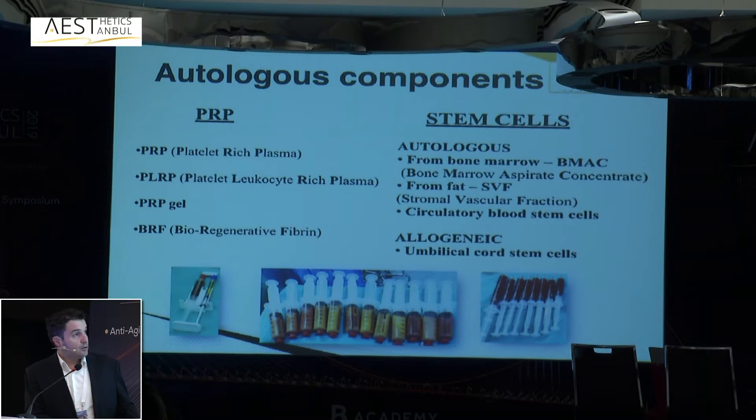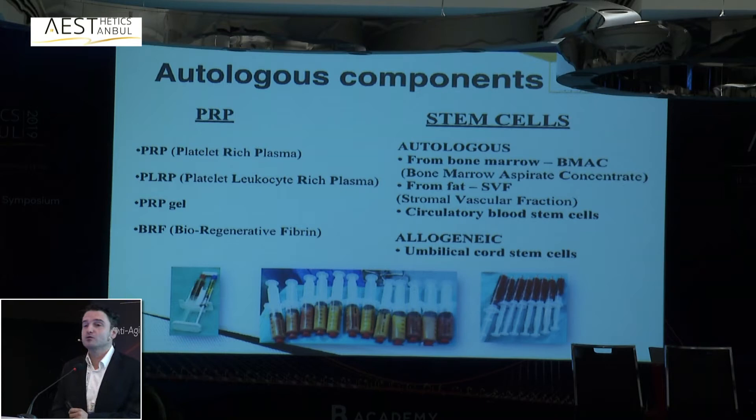When talking about stem cells, I want to say that if we are talking about autologous components, we are really overusing the word 'stem cells.' Components we obtain from bone marrow aspirate concentrate have less than 30% classified stem cells. Similarly, stromal vascular fraction contains between 20 and 30% classified stem cells. So these products are not actually pure stem cells, and I will explain why we still use that term.